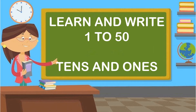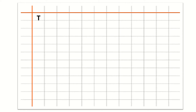Hello students, today we are going to learn and write 41 to 50 counting and 1 to 50 with the method of 10s and 1s. So, let's start. First we write T — T is for 10s. Then O — O is for 1s.